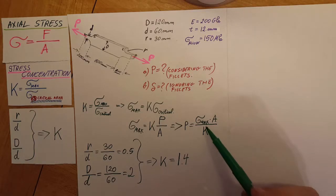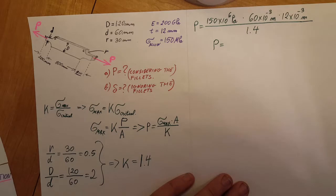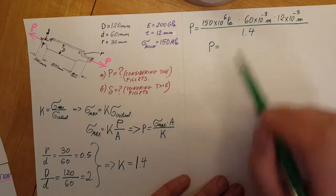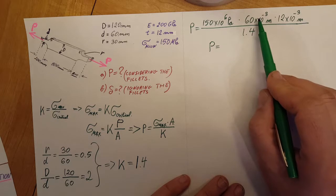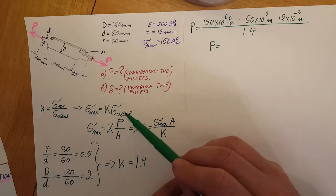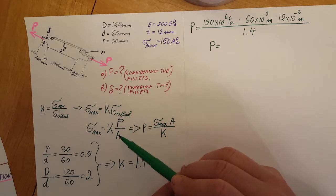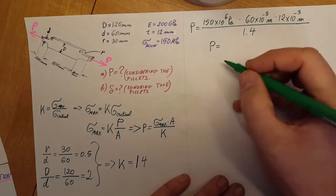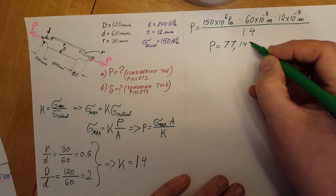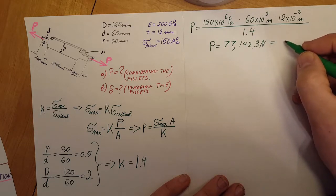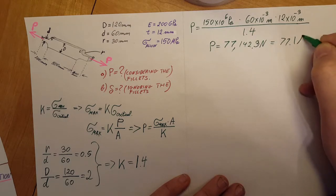Now we have everything needed in the formula. Plugging in stress max, the critical area, and K equals 1.4, we calculate P equals 77,142.9 newtons, which we can round to 77.1 kilonewtons. That completes Part A.